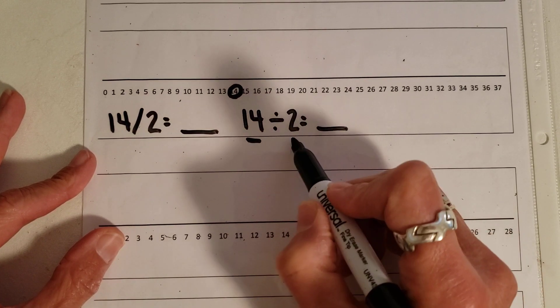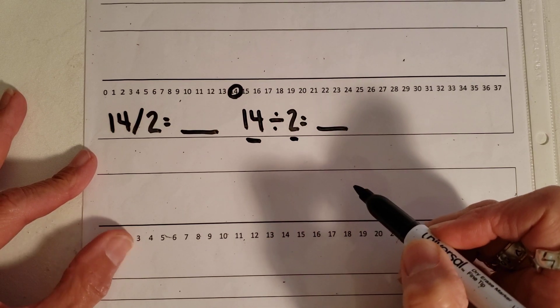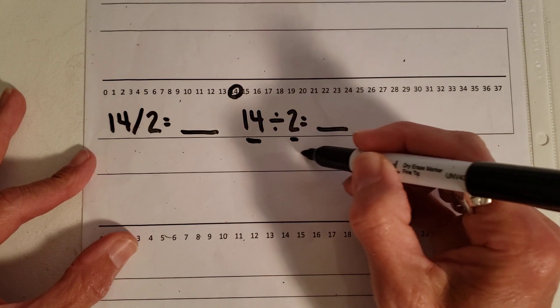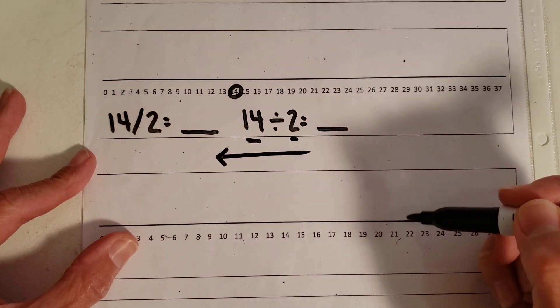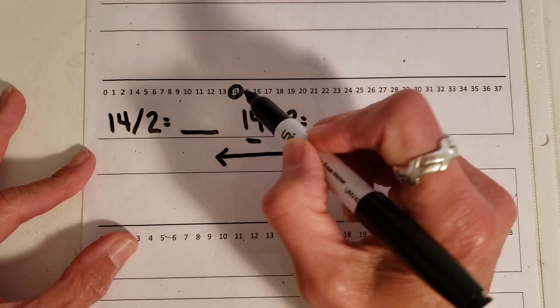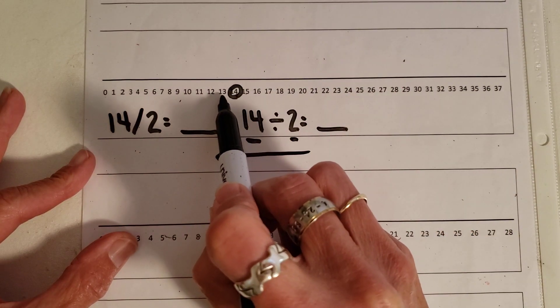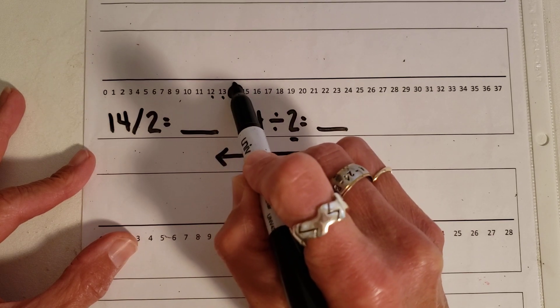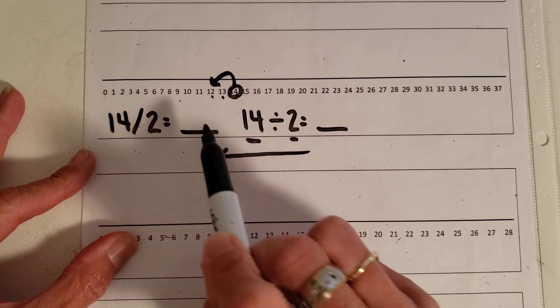All right, the next number is going to tell me how big my hops are going to be. So I know that I need to go this way when I'm dividing because I'm getting smaller. So I'm going to start here, and I'm going to go back 1, 2. So I'm just going to hop right there.